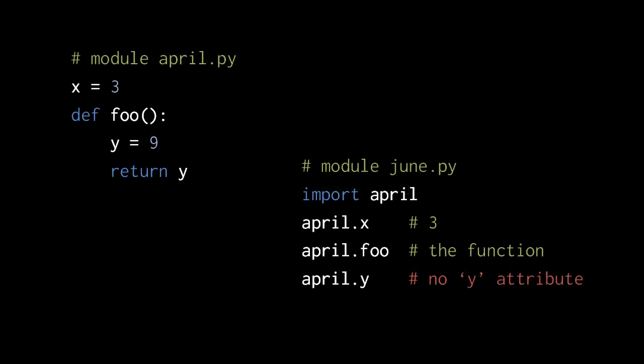Consider this example. Say we have two files of Python source code, one called april.py, the other called june.py. In the april module, two names get assigned to at the top level. First, the variable x is given the value 3, and then the def statement creates a function object which it assigns to the variable foo. So the april module object ends up with two attributes, x and foo.